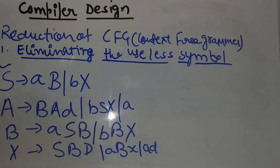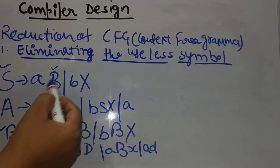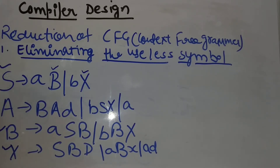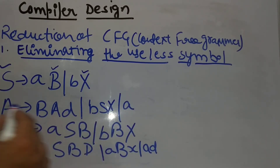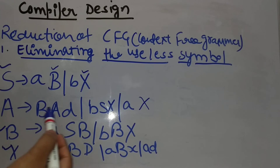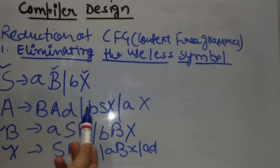So friends, when source symbols are not generating, we don't have non-terminal symbols that produce terminal strings. So we don't generate this grammar — we don't use it. When we don't use it, we don't add this grammar to our production, and we also cannot add it to our language. Now friends, B and X — the first thing we have told you is that if non-terminals are not coming to source symbols, or non-terminals which are not reachable.